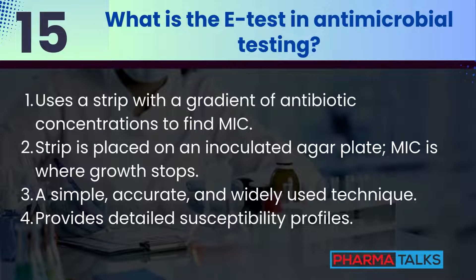What is the E-test in antimicrobial testing? The E-test uses a strip with a gradient of antibiotic concentrations to determine MIC. The strip is placed on an inoculated agar plate, and the MIC is read where bacterial growth stops. It's simple, accurate, and widely used in pharmaceutical microbiology. The E-test provides detailed susceptibility profiles.